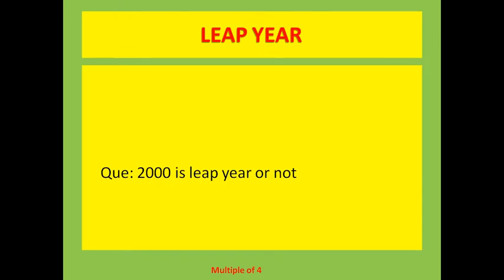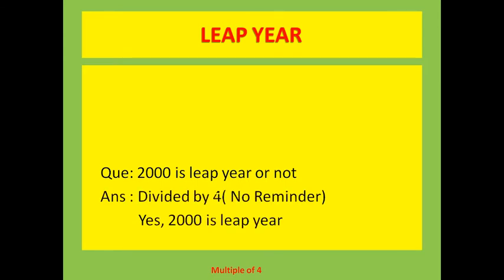Same type of question: when you divide 2000 by 4, it is fully divisible. Hence, it is a leap year. You can see there is no remainder.